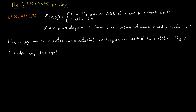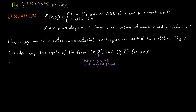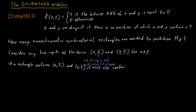Consider the two inputs (x, complement of x) and (y, complement of y) for some x that is not equal to y. The complement of a bit string is exactly what you would think: if you have a bit string 1, 0, 1, the complement would be 0, 1, 0 — we just flip every bit. Now suppose we have a combinatorial rectangle that contains both of those inputs, that contains (x, complement of x) and (y, complement of y). Then that rectangle must also contain (x, complement of y) and (y, complement of x), because of the properties of combinatorial rectangles — otherwise it's not a rectangle.